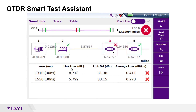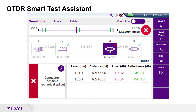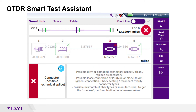The center display shows summary results for each acquisition. Events are marked with a green check or red X based on the pass-fail settings. You can tap on any icon to get detailed results for that event. Results include distance, loss, reflectance, and the event type. Tapping on the information icon provides a list of possible causes for the failure.